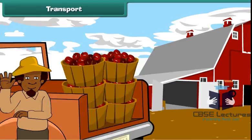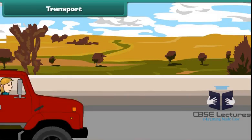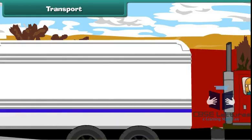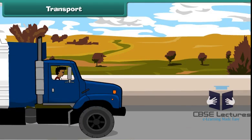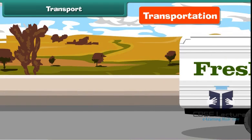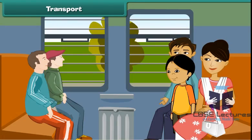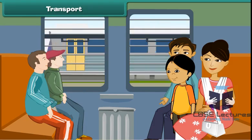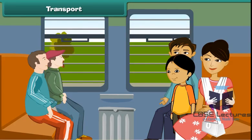Transport. The movement of goods, animals and people from one place to another is known as transportation, or simply transport. Transport removes the barrier of distance and promotes trade between places.